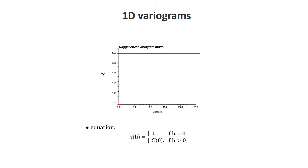In 1D, we start with the simplest model: the pure nugget effect model. This model says the variogram is 0 at the origin and then it's equal to a constant — a straight line. The variance here is 1, but you can have essentially any kind of variance. This is not a useful model on its own — you would never model a pure nugget effect, because you're admitting that everything is noise, and the best prediction in a least-squares sense would simply be the mean.